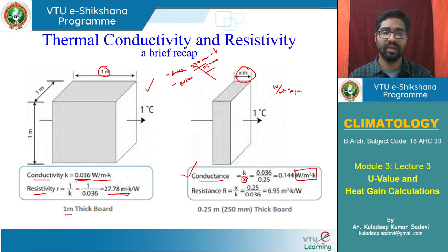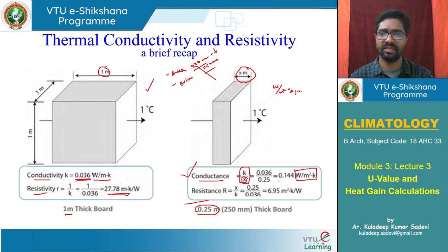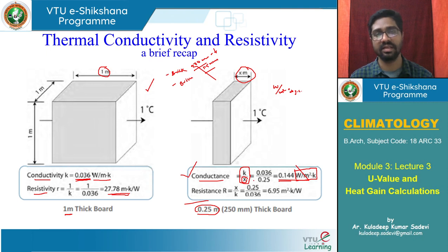If the same board is 250 mm thick (0.25 meter), we divide conductivity by X. Conductance equals conductivity divided by X; once we have conductivity, K/X gives actual conductance. If the material is 1 meter thick, dividing K by 1 gives K — so conductivity becomes conductance if the thickness is 1 meter. Resistance of the material is 1 by conductance.